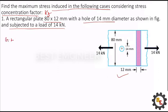Let's write the given data. Breadth is equal to 80 millimeter, thickness is 12 millimeter, diameter of the hole is 14 millimeter, and the load W equals 14 times 10 to the power 3 Newton.